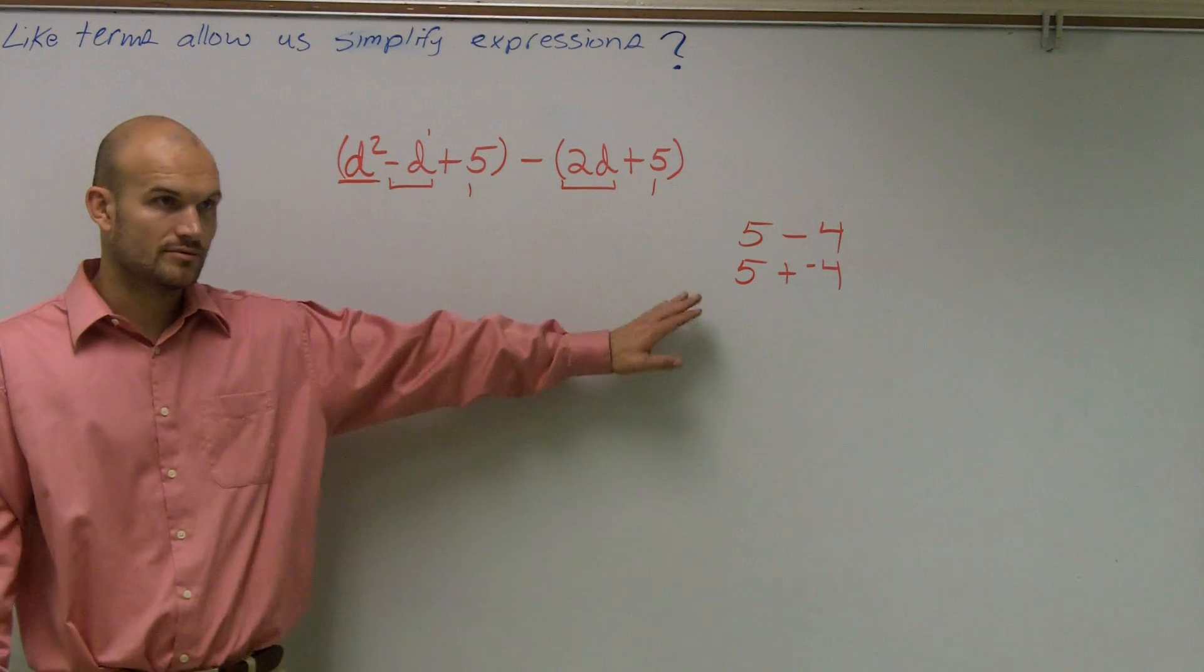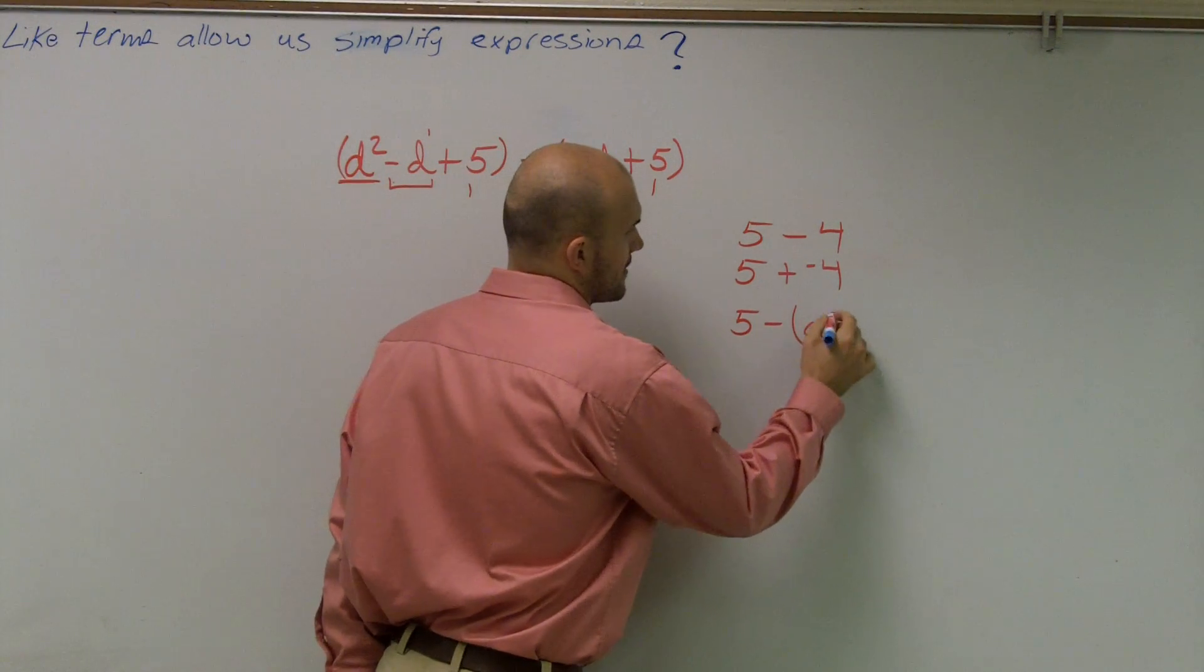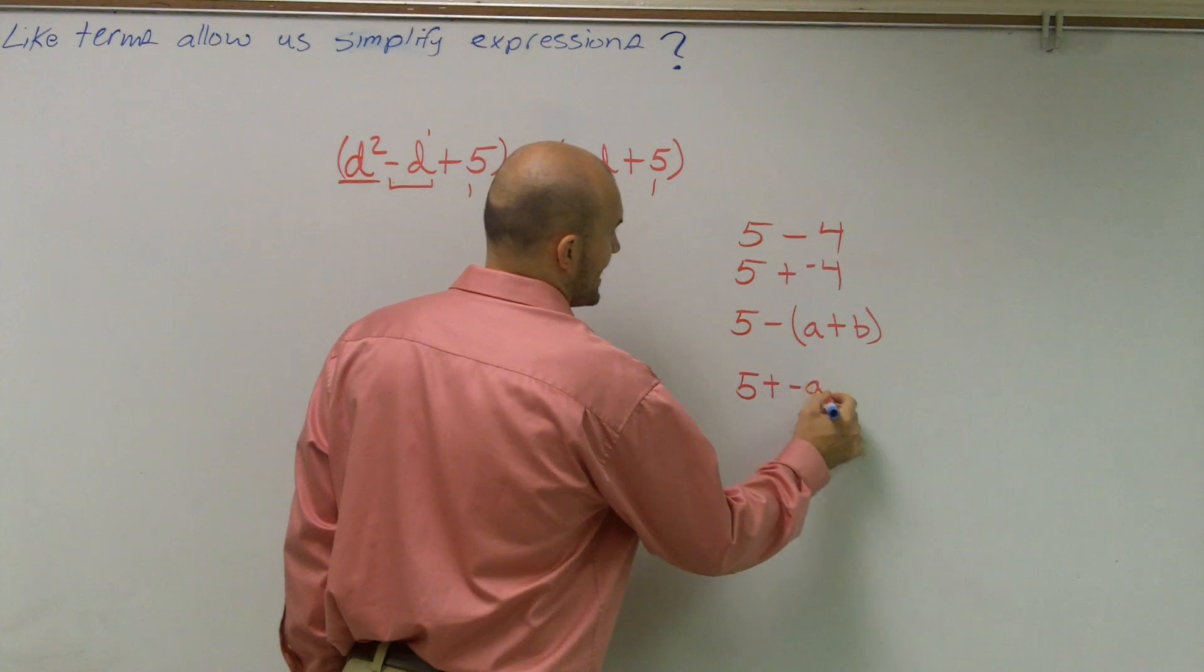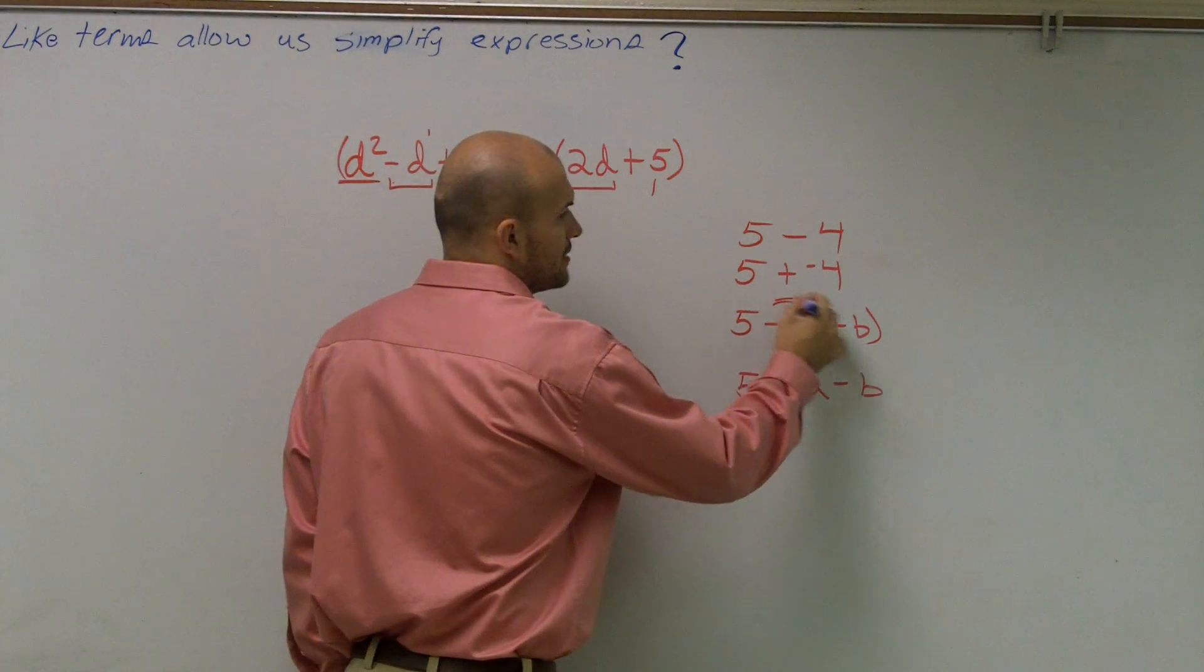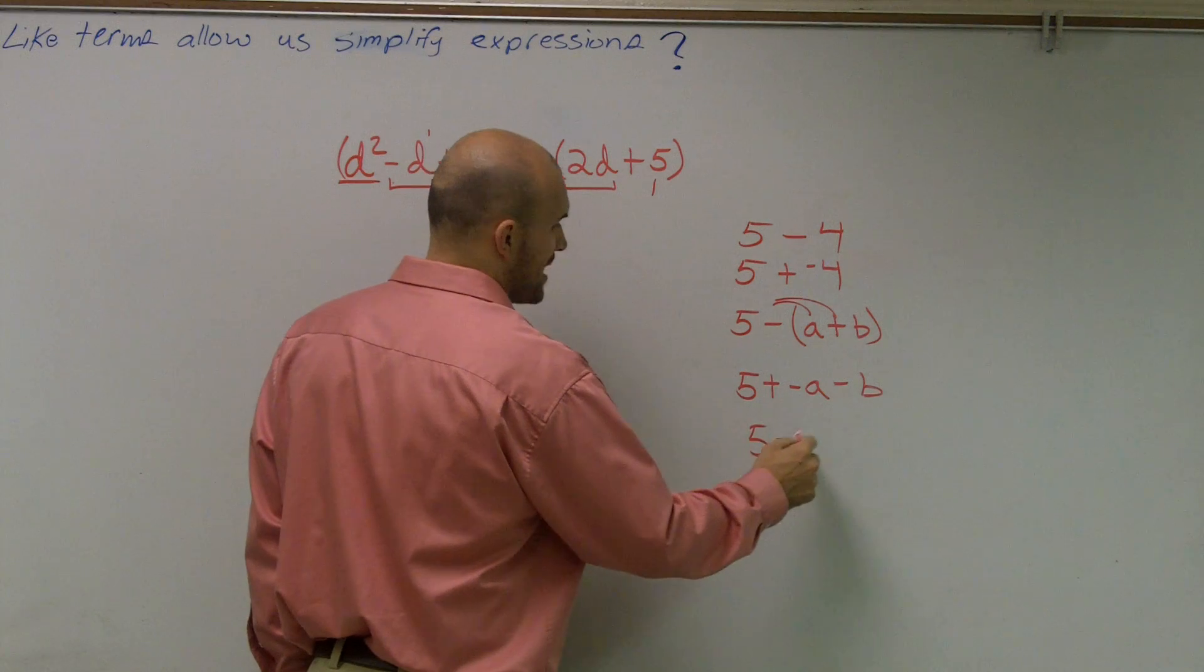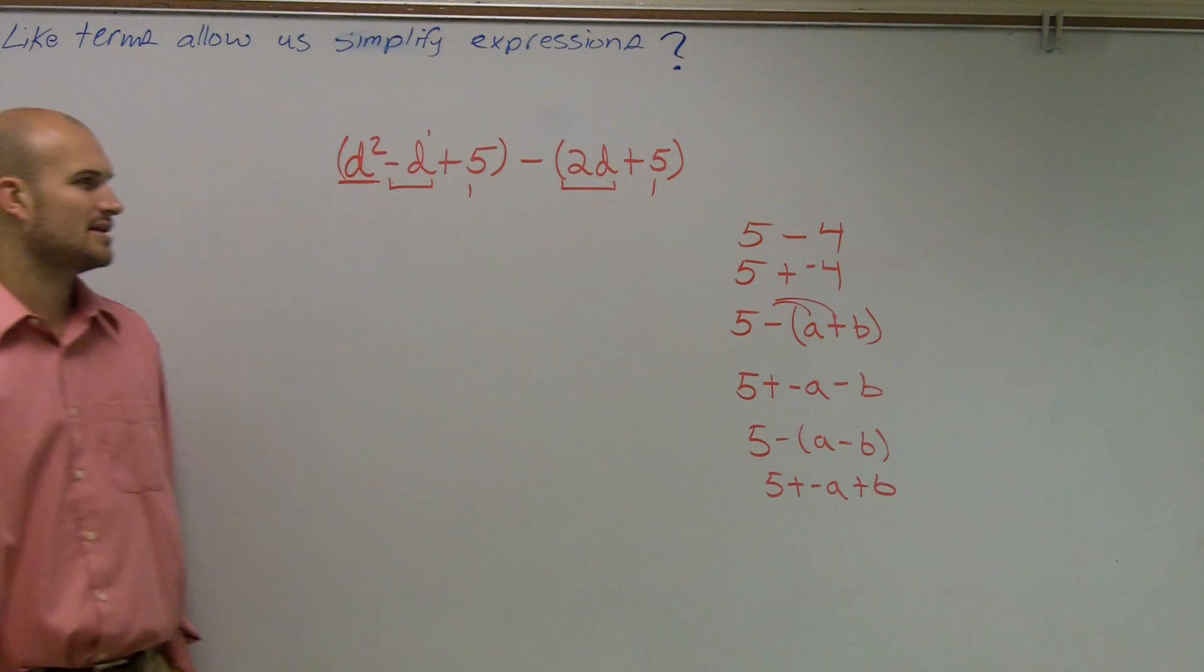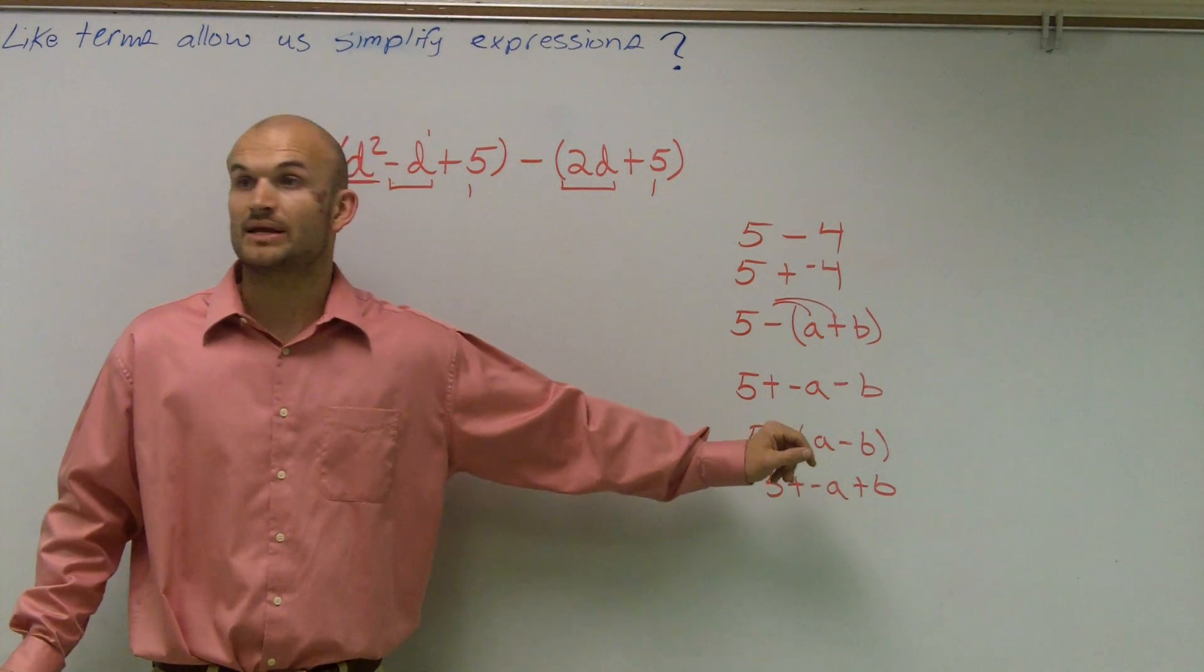Writing a subtraction problem as an addition, right? So what about instead of using 4, I said 5 minus (a+b). How can I rewrite 5 minus (a+b) as an addition problem? Well, you can write 5 plus negative a, negative b. And what I really did was I used the distributive property to distribute that negative sign to both of my terms inside the parentheses. The same thing works for 5 minus (a-b). It becomes 5 plus negative a plus b. Got it?